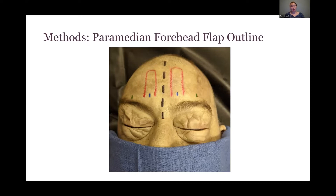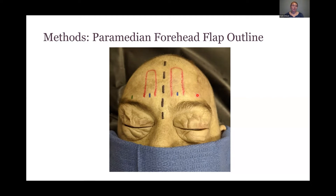For the first step, we did a paramedian forehead flap outline. The black marker marked our facial midline. We then used a blue marker at 1.5 to 1.7 centimeters from midline, marking the average supratrochlear artery location. We then measured 0.07 centimeters on both sides of the blue mark to create the correct width for the forehead flap. We made a straight flap all the way around. The green marker at 2.7 centimeters from midline marks the average supraorbital neurovascular bundle area.